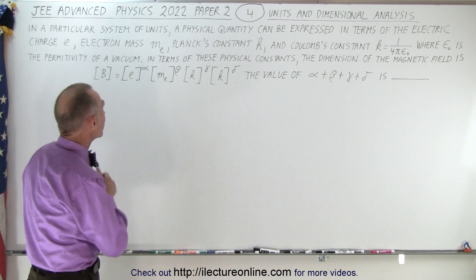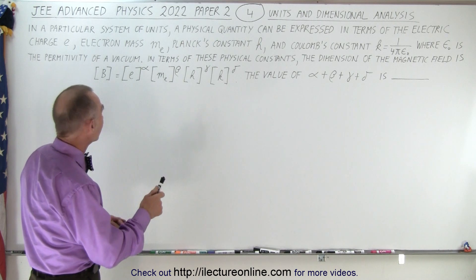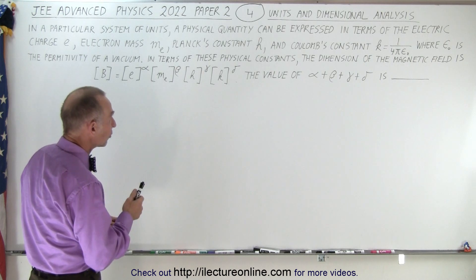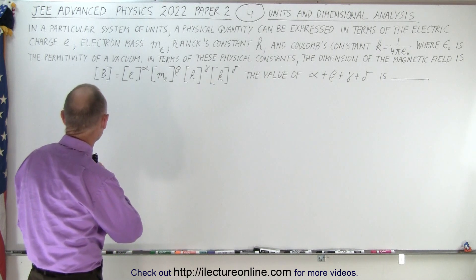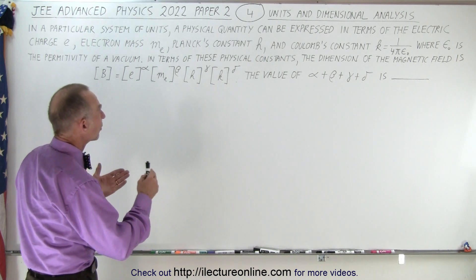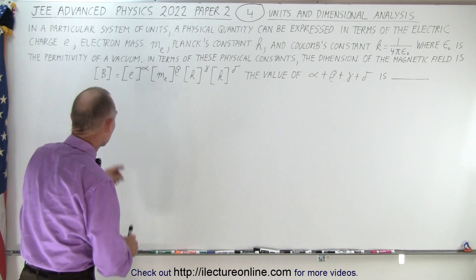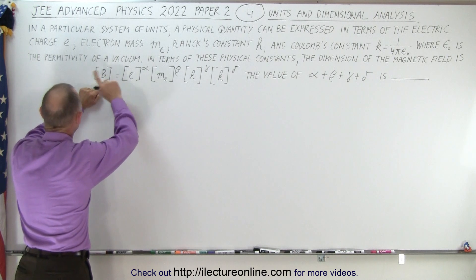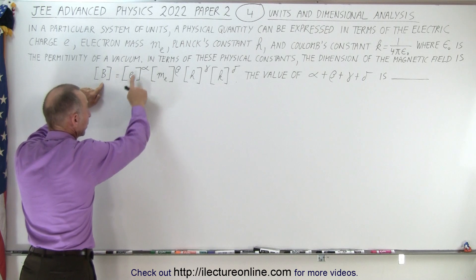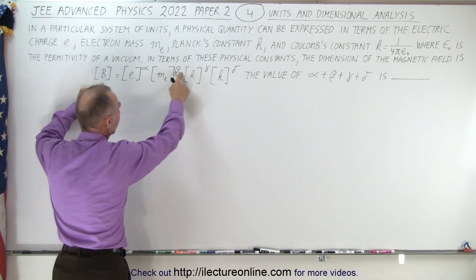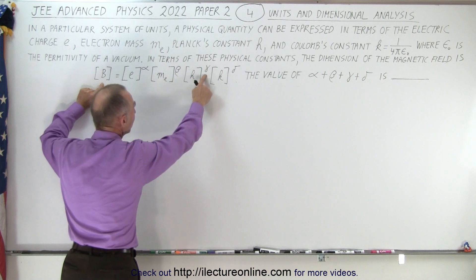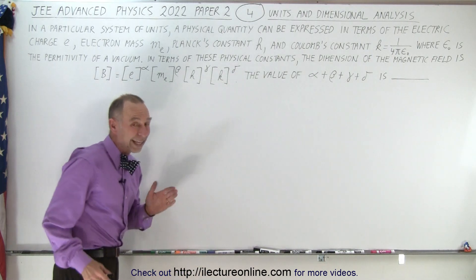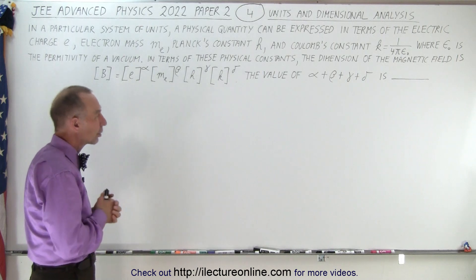In a particular system of units, a physical quantity can be expressed in terms of the electric charge, the electron mass, Planck's constant, and Coulomb's constant, where epsilon sub nought is equal to the permittivity of a vacuum. The dimension of the magnetic field should equal the dimensions of electric charge to the alpha power, electron mass to the beta power, Planck's constant to the gamma power, and Coulomb's constant to the delta power. You have to add those four exponents together — that sum is what they're looking for.